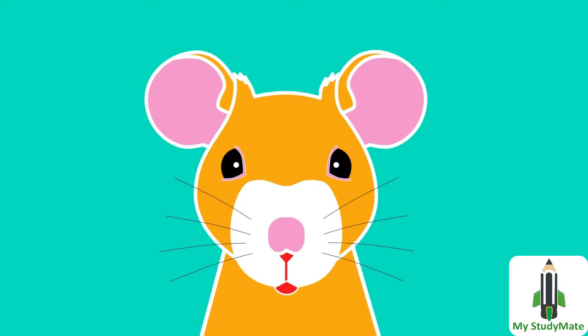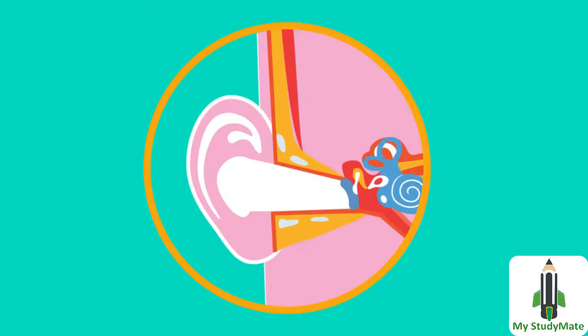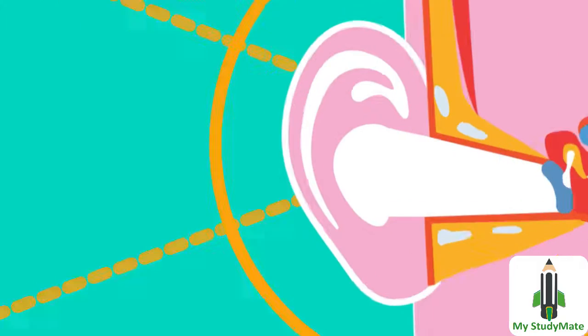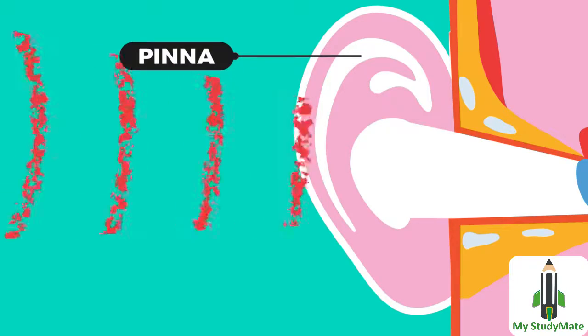Did you know rodents are frightened of some sounds? In this video we will look at how the ear works and how different animals can hear different sounds. The visible part of the ear is called the pinna. It funnels sound into our ears.